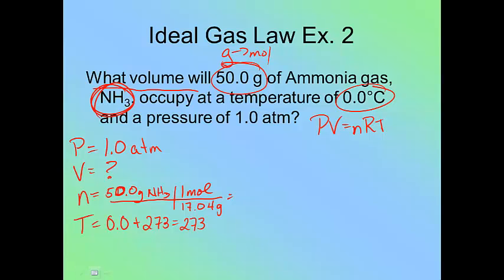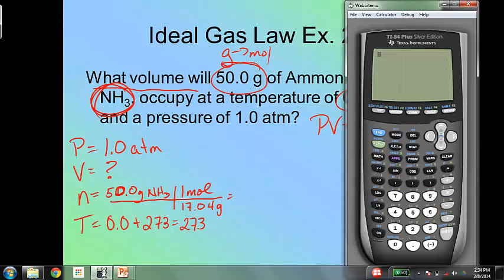So I go to my handy-dandy calculator. I clear out what was there before. And I take 50 divided by 17.04, and I get 2.93.